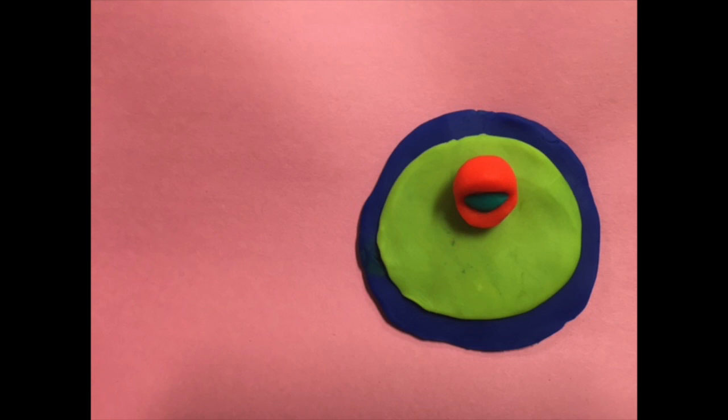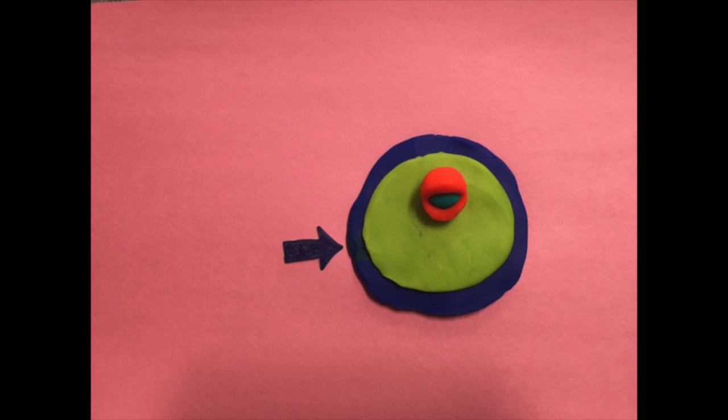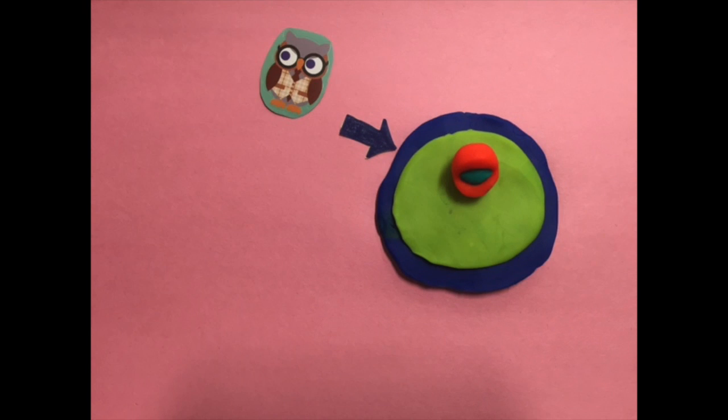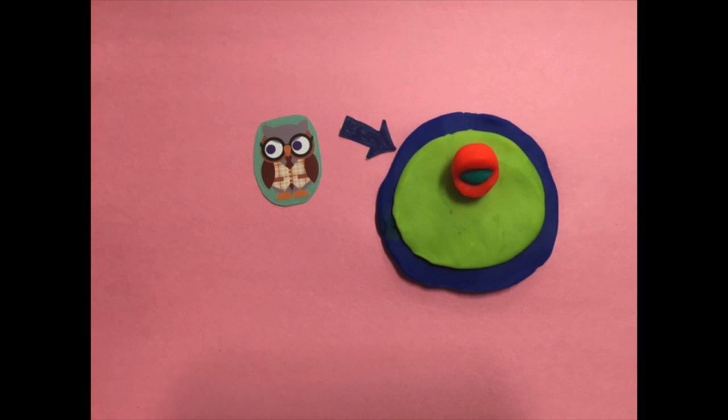We will be focusing on three main parts of an animal cell, including the cell membrane, cytoplasm, and nucleus. Oh, here comes Professor Owl. He will be explaining each part of the cell and their function.